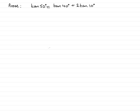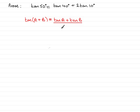To prove this, I'm going to use a well-known identity. The tan of the sum of two angles — tan(a + b) — is equal to tan(a) plus tan(b), all divided by 1 minus tan(a) times tan(b). And for the difference, tan(a - b), it's tan(a) minus tan(b), all over 1 plus tan(a) times tan(b).